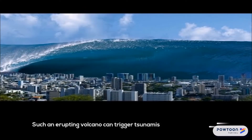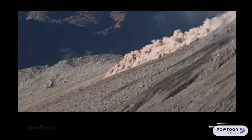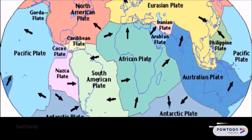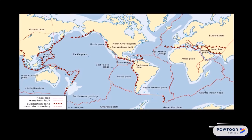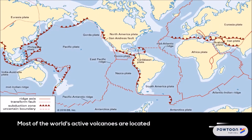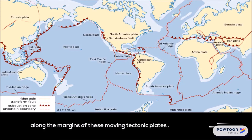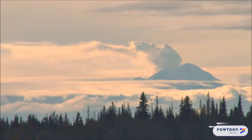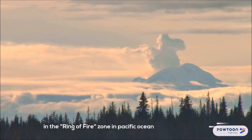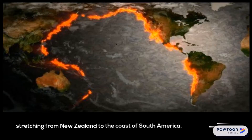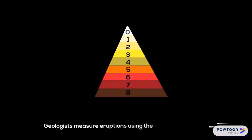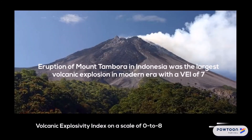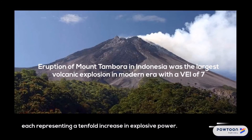An erupting volcano can trigger tsunamis, flash floods, earthquakes, mud floods, and rockfalls. Earth's rigid outer surface layer is broken into several tectonic plates, which are constantly in motion. Most of the world's active volcanoes are located along the margins of these moving tectonic plates. More than 50% of the world's active volcanoes are in the Ring of Fire Zone in the Pacific Ocean, stretching from New Zealand to the coast of South America. Geologists measure eruptions using the Volcanic Explosivity Index on a scale of 0 to 8, each representing a tenfold increase in explosive power.